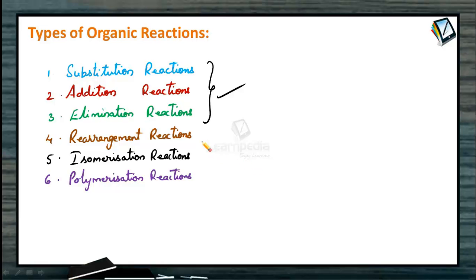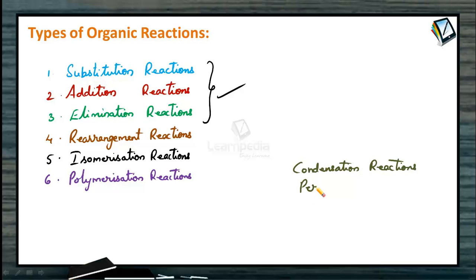We come across rearrangement reactions, polymerization reactions, and isomerization reactions to a very, very limited extent, so no need to worry about their complete detailed mechanisms. In addition, there are other types of organic reactions like condensation reactions and pericyclic reactions. Condensation reactions will be discussed separately in the chapter on Aldehydes and Ketones in 12th standard.